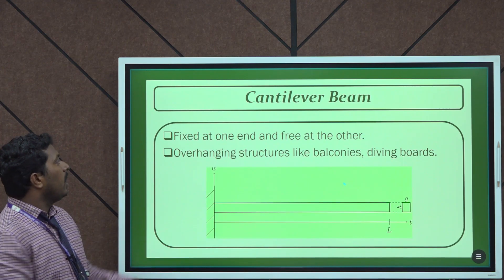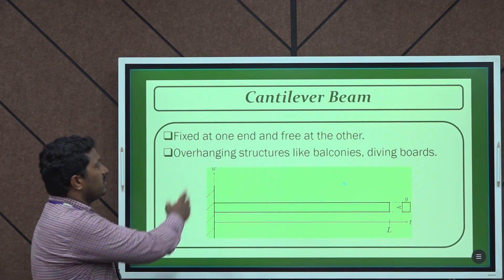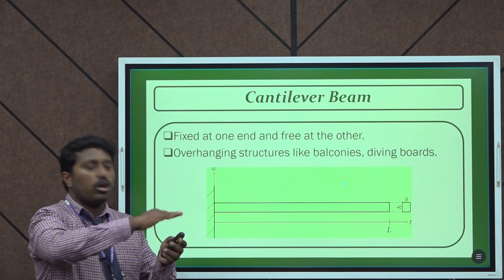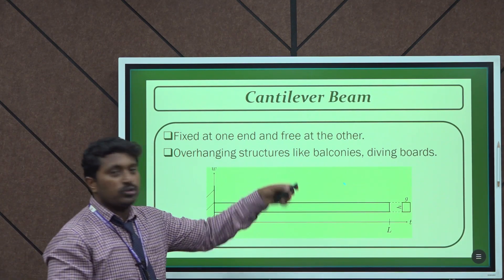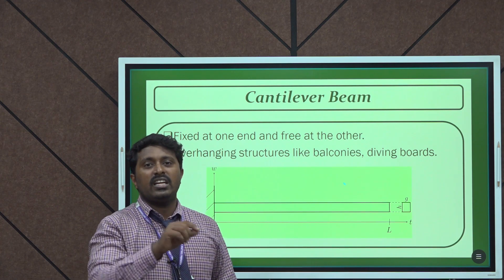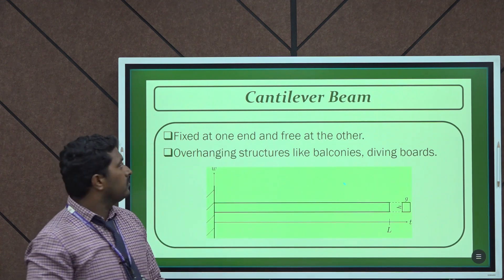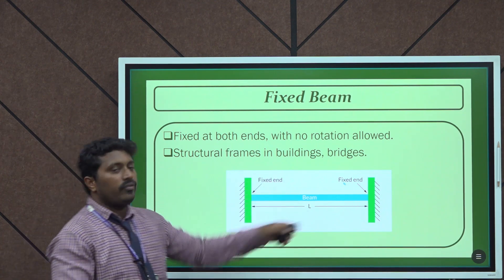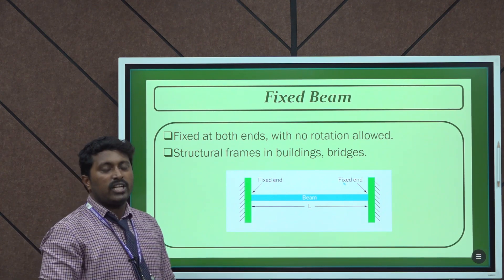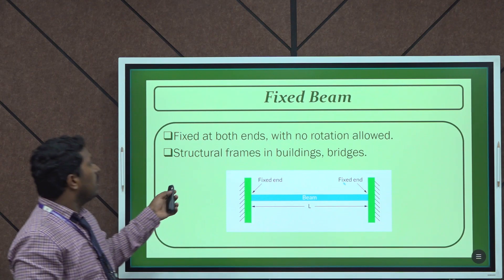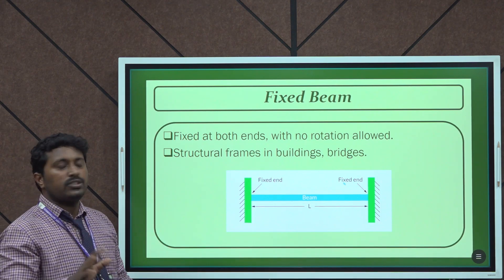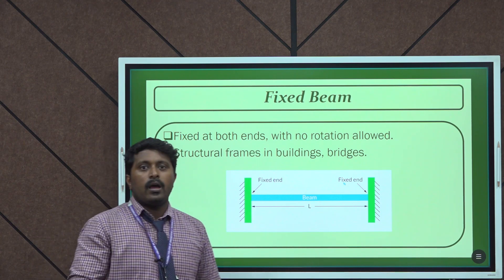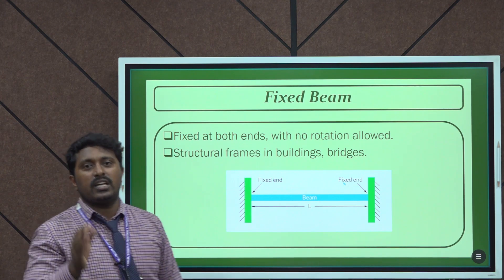The next type is the cantilever beam, where one end is fixed and the other end is free. This is mainly used in applications such as balconies and diving boards in swimming pools. Next is the fixed beam, where both ends are fixed and the beam is not able to rotate — that is why it is called a fixed beam. Fixed beams are the main structural members used in buildings as well as bridges, and are the most common type of beam used in buildings.